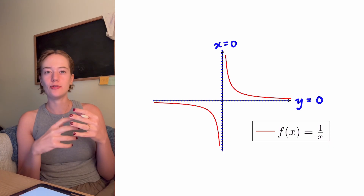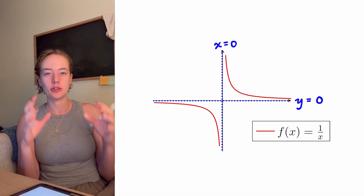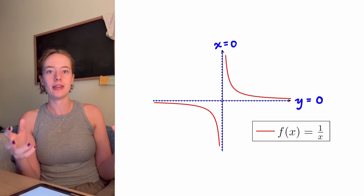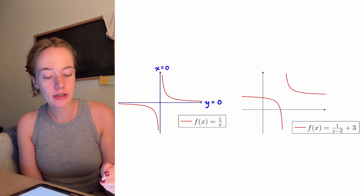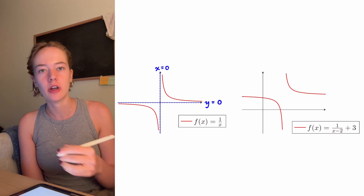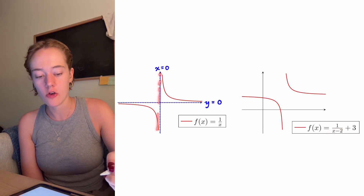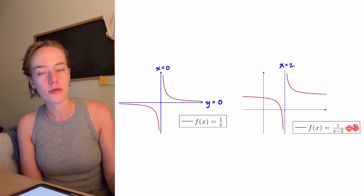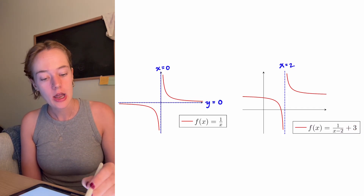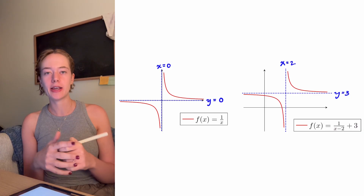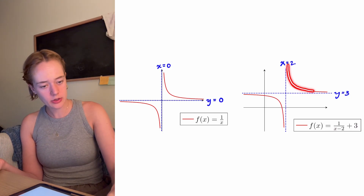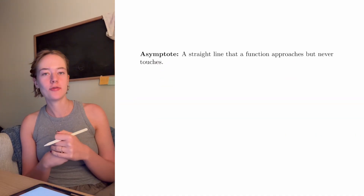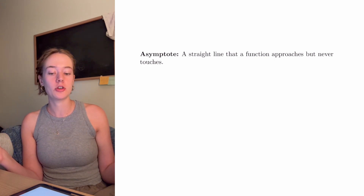Another helpful example is taking that exact graph and just shifting it — up, right, down, or left — so you can see asymptotes that aren't exactly the x-axis and the y-axis. The graph on the right shows this. I've shifted it right two, so our vertical asymptote goes from x equal to zero to x is equal to two. Then we've shifted up three, giving us our new horizontal asymptote: before it was y equals zero, now it's y is equal to three. A general definition: an asymptote is a straight line that a function approaches but never touches.